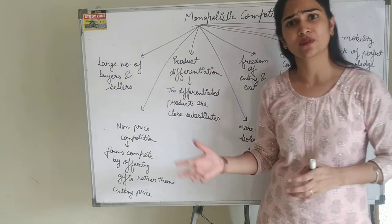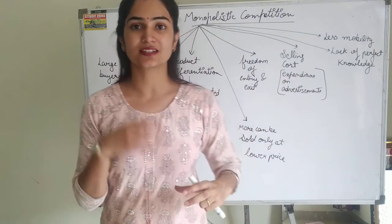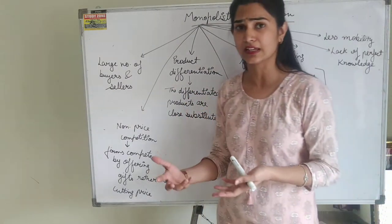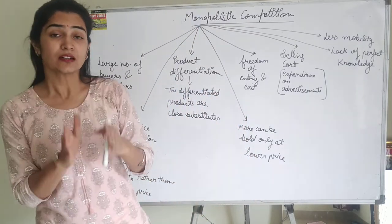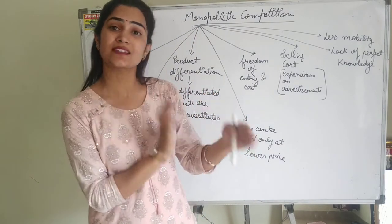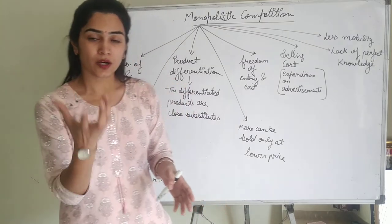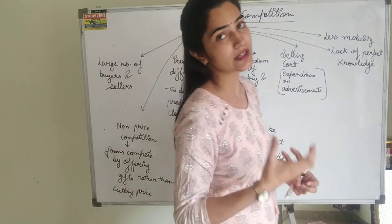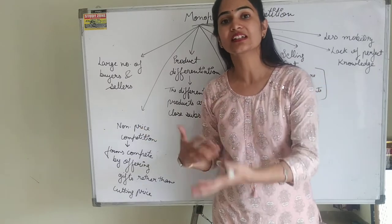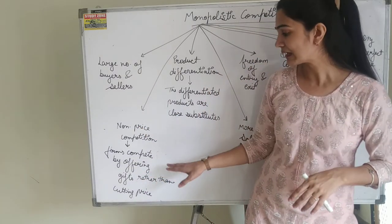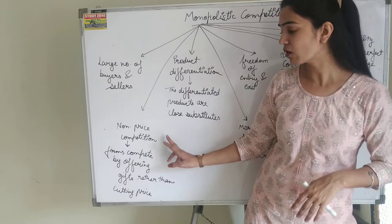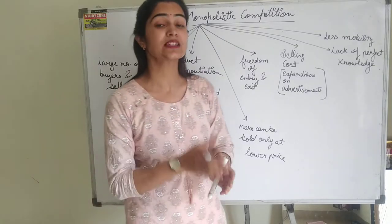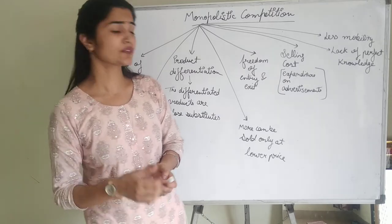For example, there are offers like buy one get one free, or a free item with a purchase. These are several offer schemes to increase the sale of the product. But sellers will not cut down their prices. They will offer certain additional products or discounts along with the commodity to attract customers, rather than cutting the price. So in monopolistic competition, there is non-price competition — it is not based on price but on quality and consumer preference.